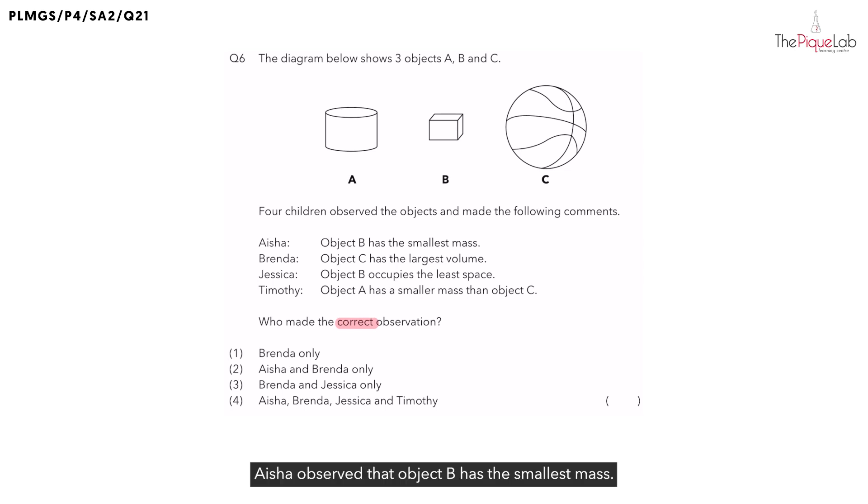Aisha observed that object B has the smallest mass. Based on the diagram given, are we able to determine the mass of the objects? No. Why are we unable to determine the mass of the objects? This is so as no electronic balance or lever balance were used to determine the mass of the objects.